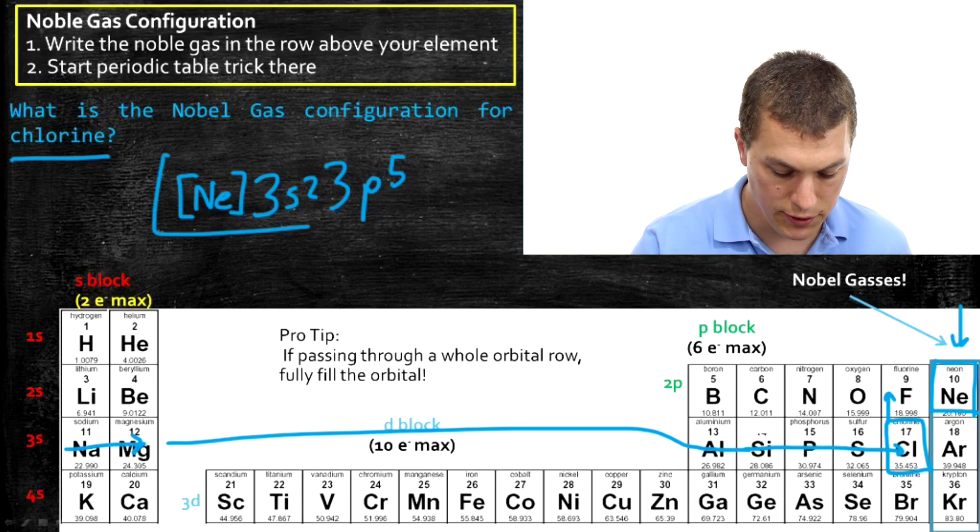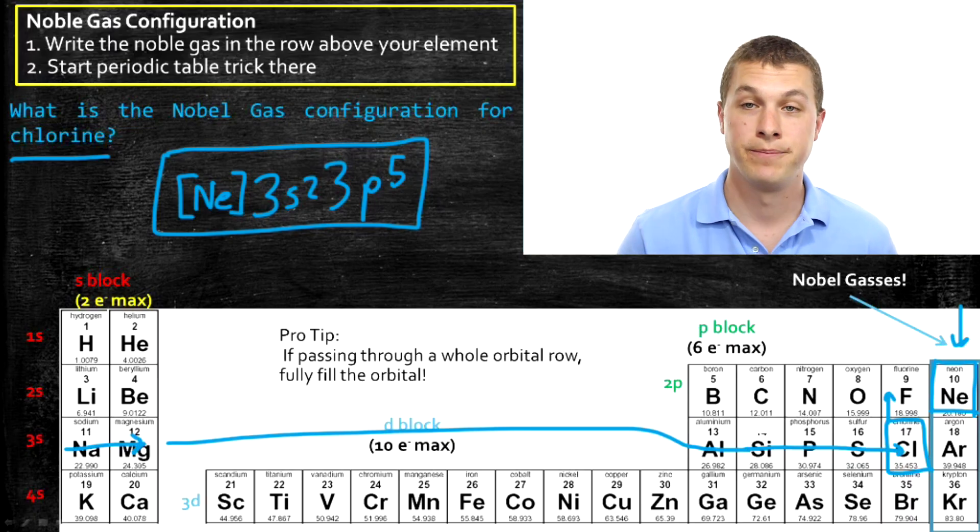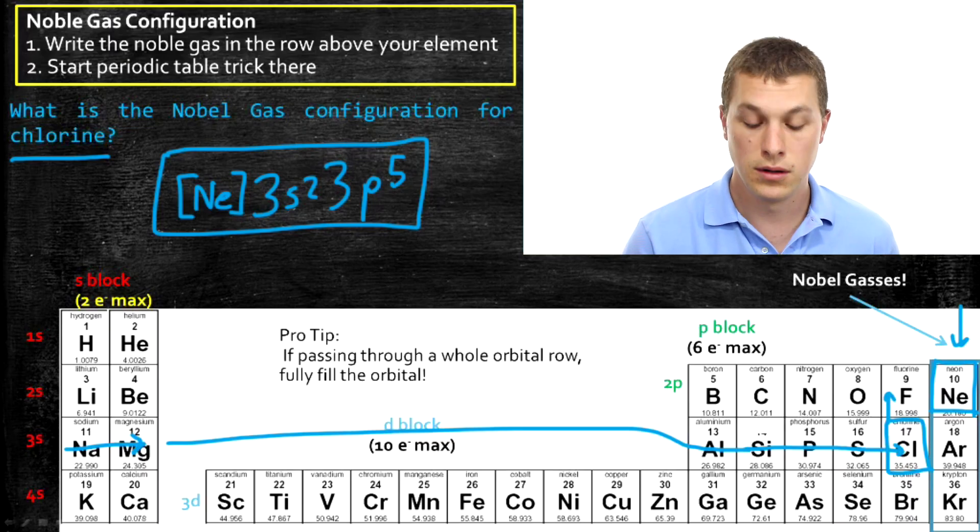So the main trick is figuring out which noble gas you need to use. It's just one row up. That's the noble gas you use. But once you do that, then you use the periodic table trick from that noble gas just like you would have before. And you can write your noble gas configuration. And it's much shorter. Let's do another example.